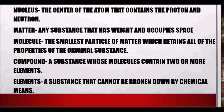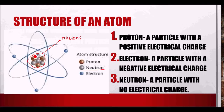The nucleus is the center of the atom that contains the proton and the neutron. So basically, the composition of the nucleus is proton and neutron. The electron is on the outside, orbiting the nucleus.